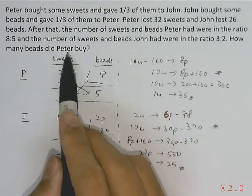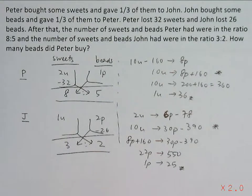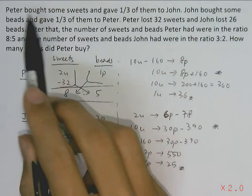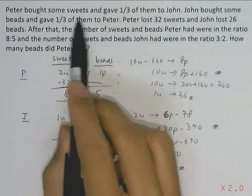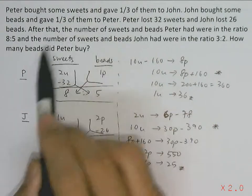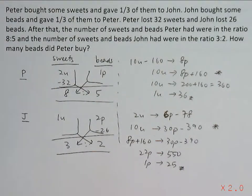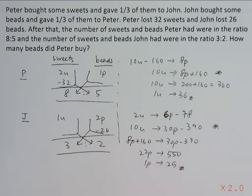The question asked how many beads Peter bought, but there's an error — Peter didn't buy any beads, Peter only bought sweets. Even though there's a mistake in the question, we can still learn that this method of cross multiplication is very effective in solving this type of question.